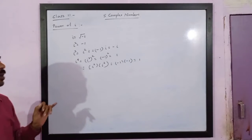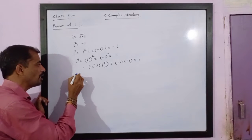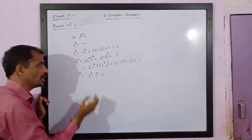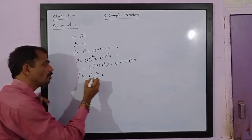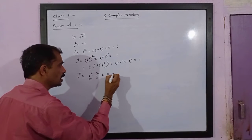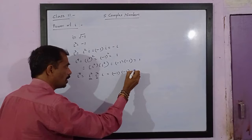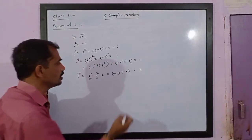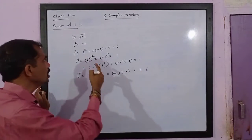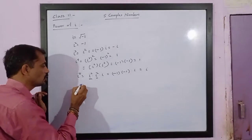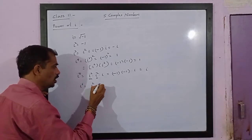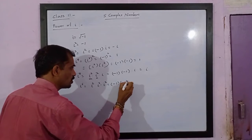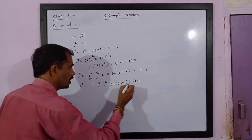Now let's see what happens with higher powers of i. For i raised to 5, we have i squared times i squared times i. The value of i squared is negative 1, so we get negative 1 multiplied by negative 1 multiplied by i. Negative times negative is positive 1, so we get i. For i raised to 6, it will be i squared times i squared times i squared, which equals minus 1 times minus 1 times minus 1, equal to negative 1.